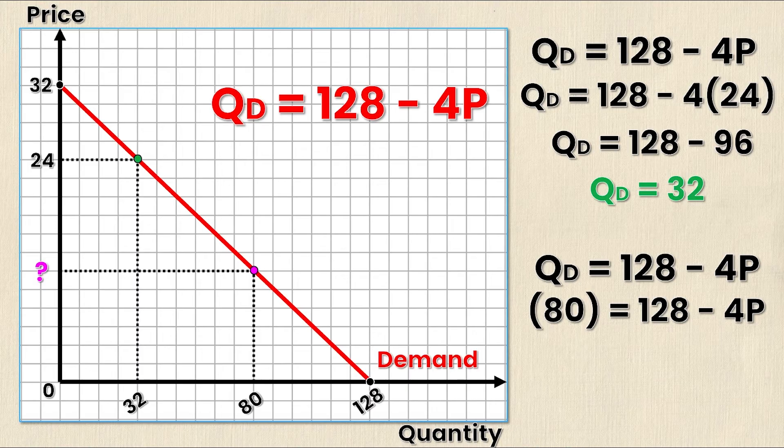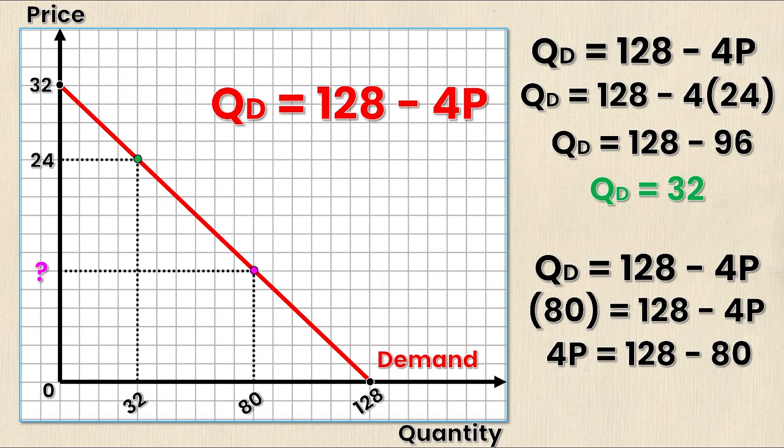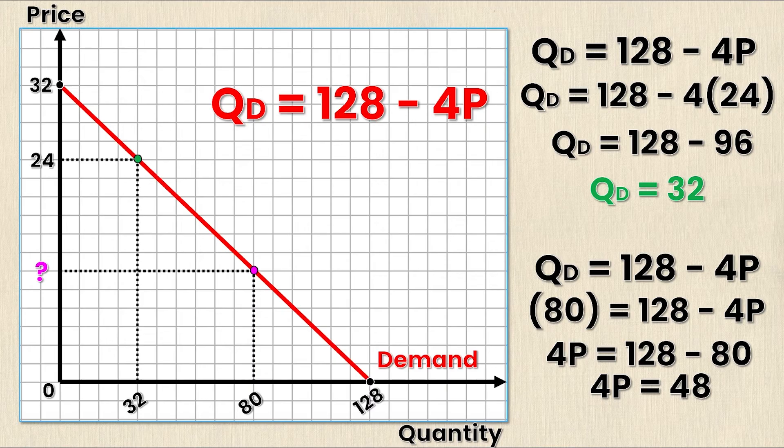Rearranging this equation with the hopes to isolate P, I get 4P = 128 - 80. Simplifying further I get 4P = 48, and again I want to isolate P so I will divide both sides by 4 which is going to give me a value of 12 for P. I can now write this on my graph as well.